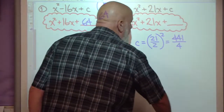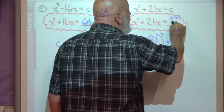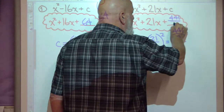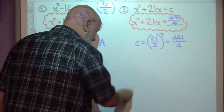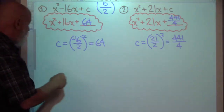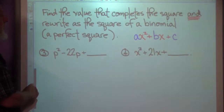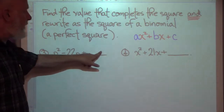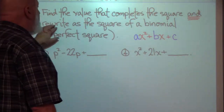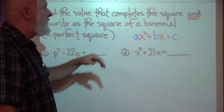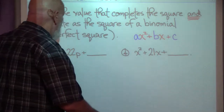If you want to, you don't have to do this, but it just shows you that it does complete the square. If I were to factor this, I would get a perfect square binomial. This is what I'm about to illustrate right now. Here it says find the value that completes the square and rewrite as the square of a binomial. In other words, we're going to complete the square and then factor.